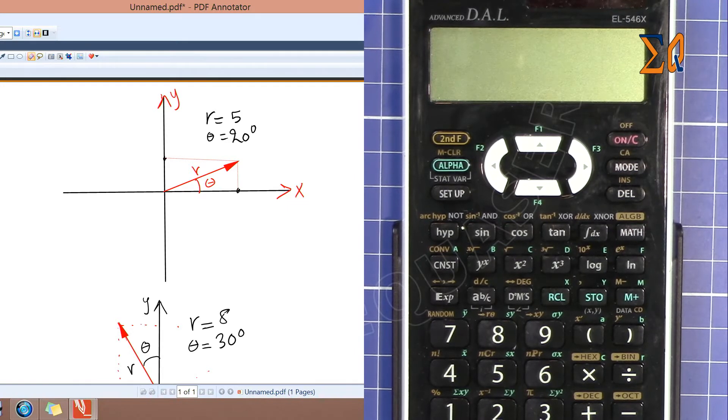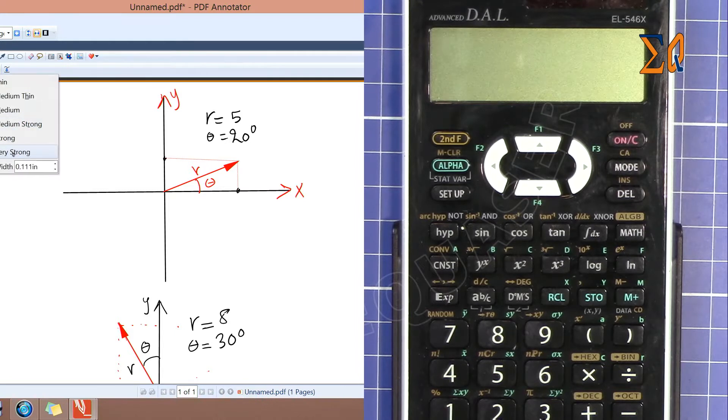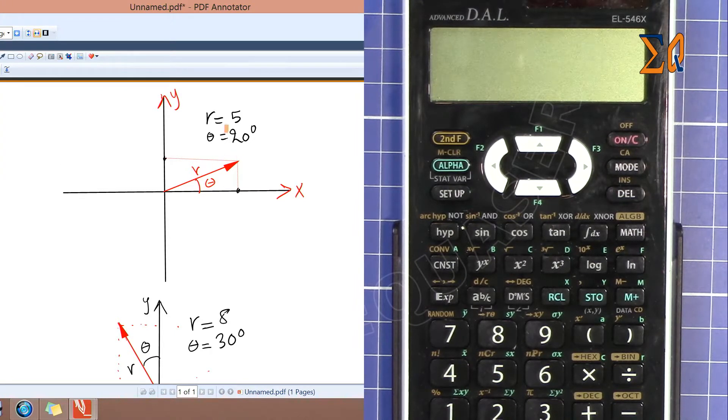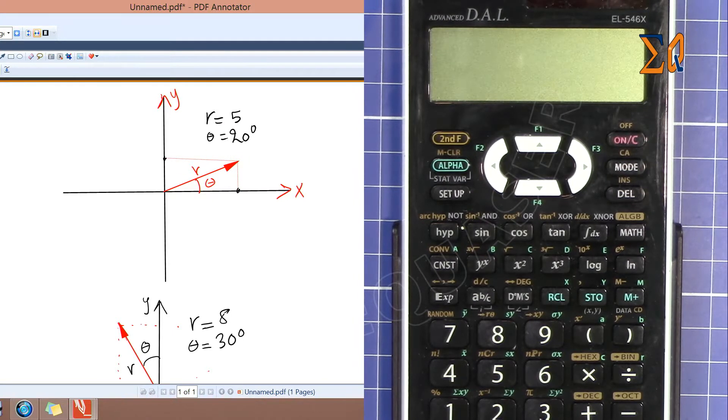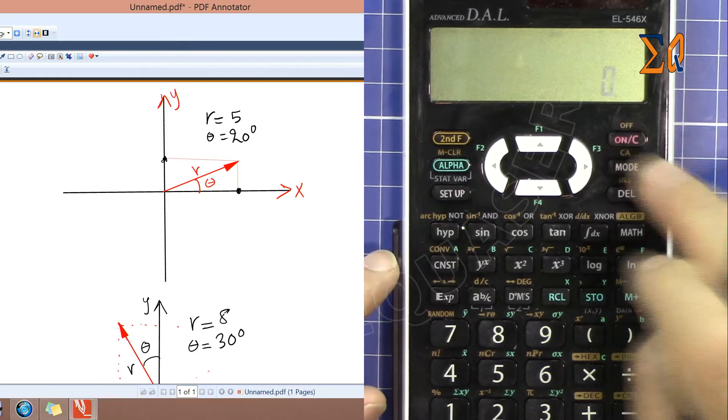Polar is a coordinate that you can see here. We have a magnitude R which is 5 and the angle is 20 degrees. In this case we would like to just find the X and the Y.